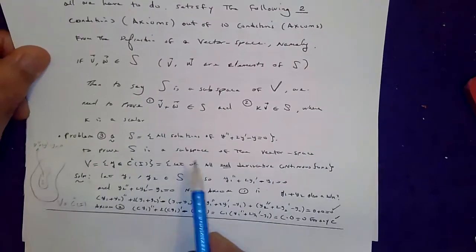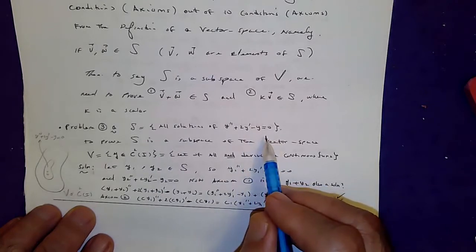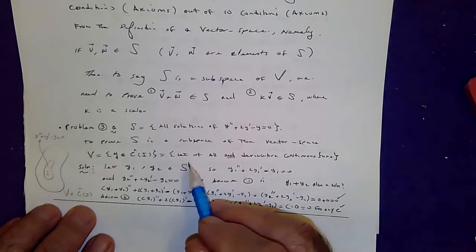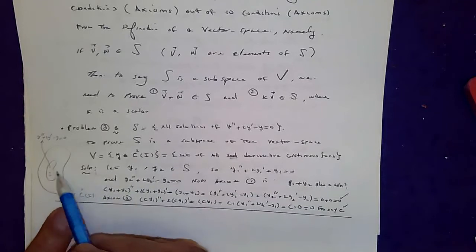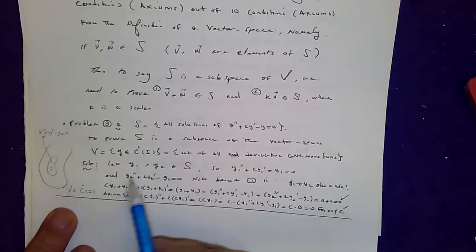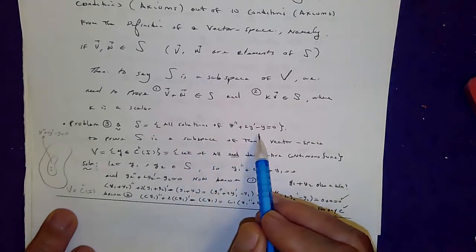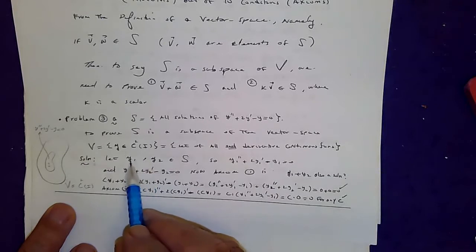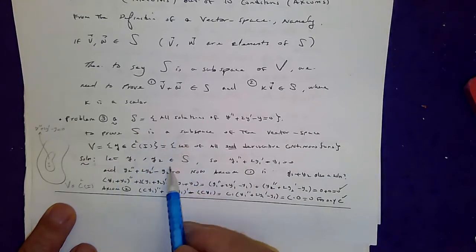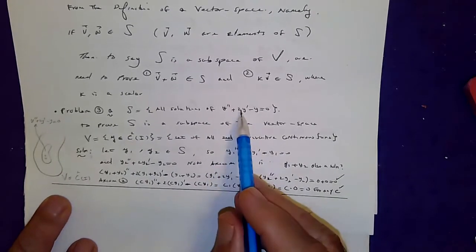Let's do a problem. Suppose S is the set of all solutions to a second-order linear homogeneous differential equation. We want to prove S is a subspace of the vector space V, which contains all second-derivative continuous functions. To begin the proof, select two functions in S — not just in V, but in S — so they must be solutions of the given differential equation.